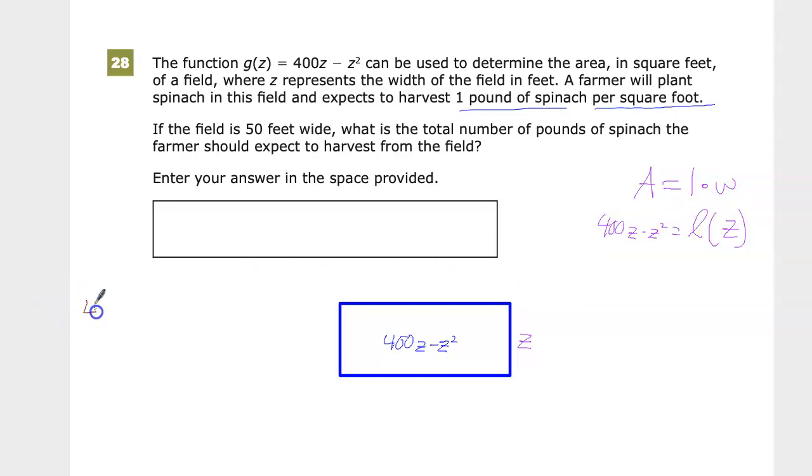So I have 400z minus z squared, and I'm going to factor out a z from both terms. That goes away. That goes away. So I end up with 400 minus z.